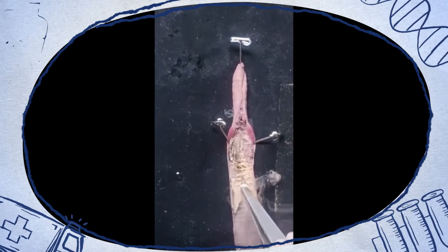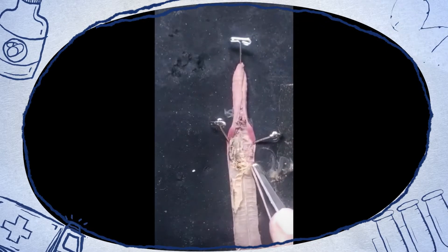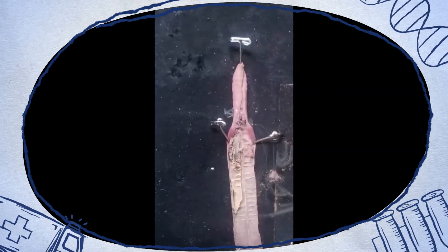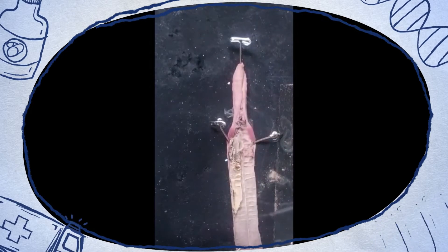As the digestive tract is being removed, you can locate the nervous system on the ventral side.